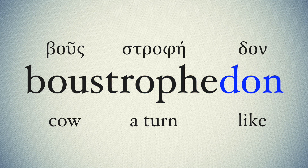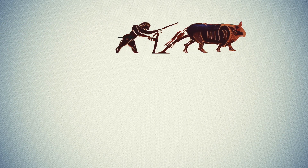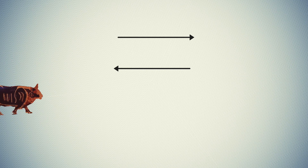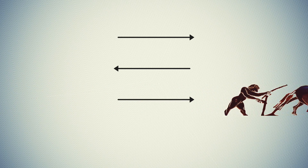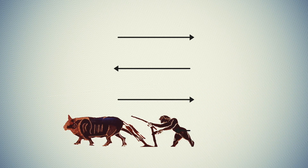So: like a cow's turning. Think of it like plowing — a farmer will plow in one direction, and then instead of going back to the same side to start his next row, he'll just start from the side he ended on. So in writing systems, every other line is reversed — forwards, then backwards.